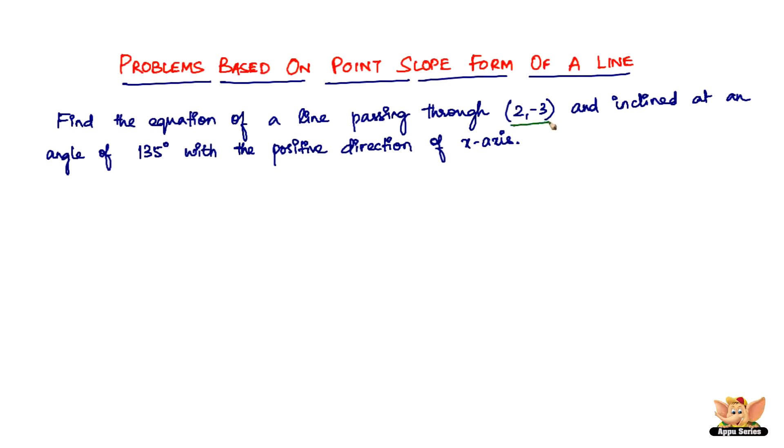One data point is given directly: the point x₁, y₁, which is (2, -3). But we also need another piece of data, which is m, the slope. Since the slope is not directly given, we use m = tan θ.